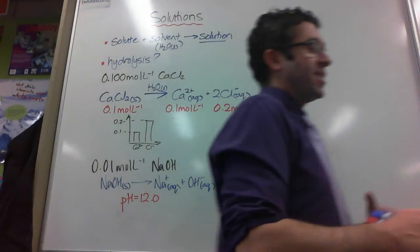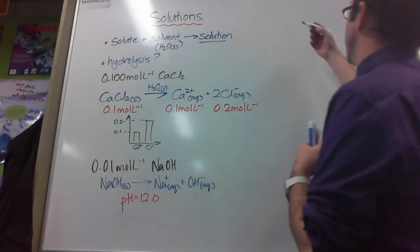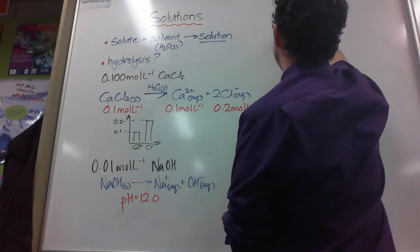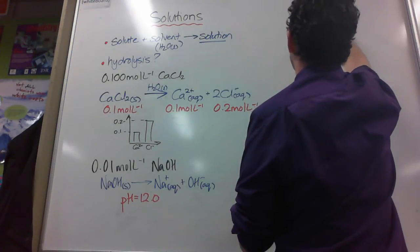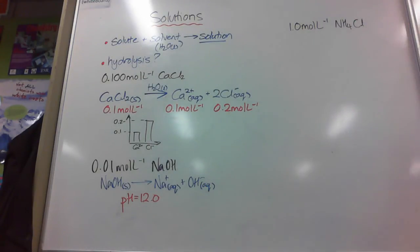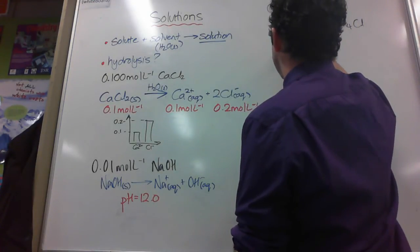The next one is a lot more complicated and a really good case study for this sort of thing. This one we're looking at 1.0 moles per litre of ammonium chloride. The first step is dissolving.